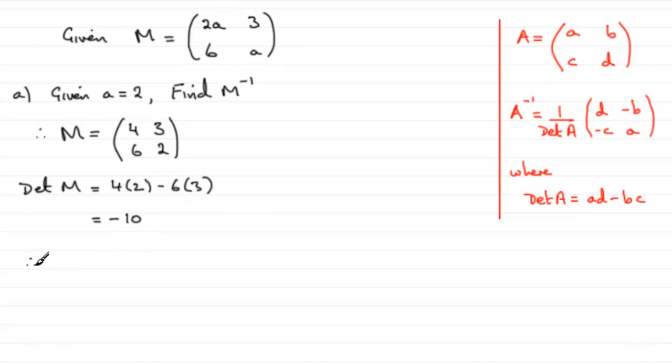So therefore we have the inverse of M is going to be 1 divided by minus 10, which is going to be minus 1 tenth. And then that is multiplied by, well what we have to do then is switch these two elements round, so we'll have 2 there and 4 there. Change the signs on these two, so you've got minus 3, and here you've got minus 6.